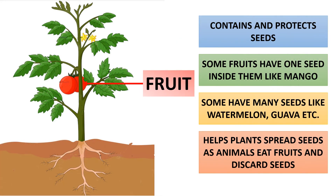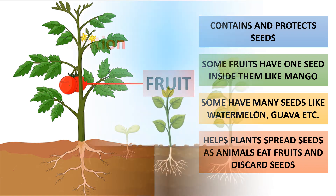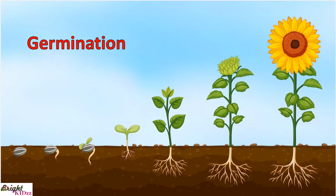Fruits are formed from flowers. They contain and protect seeds. Some fruits have one seed, like mango, while other fruits may have multiple seeds — for example, watermelon, guava, etc. Fruits help plants in spreading seeds, as it is likely that animals and humans may eat fruits and discard seeds somewhere else. These seeds, when they get favorable conditions, may grow into a new plant. This process is called germination.